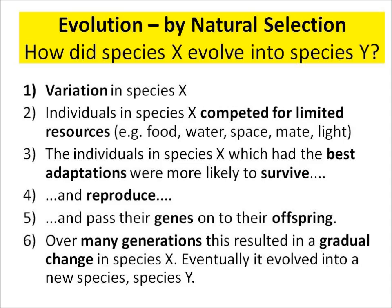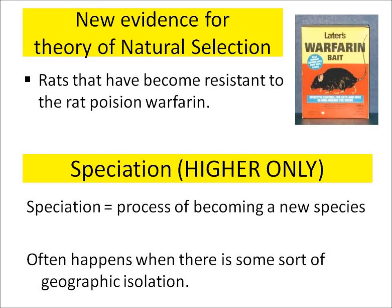That's the key idea underpinning evolution by natural selection. You also need to know that new evidence supports this theory. For instance, some rats have become resistant to a rat poison called warfarin. The fact that some rats have become resistant to this poison is evidence of natural selection.